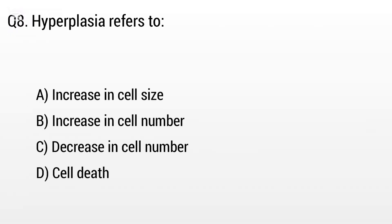Question 8. Hyperplasia refers to: Option A: Increase in cell size, B: Increase in cell number, C: Decrease in cell number. But the right answer is Option B: Increase in cell number.